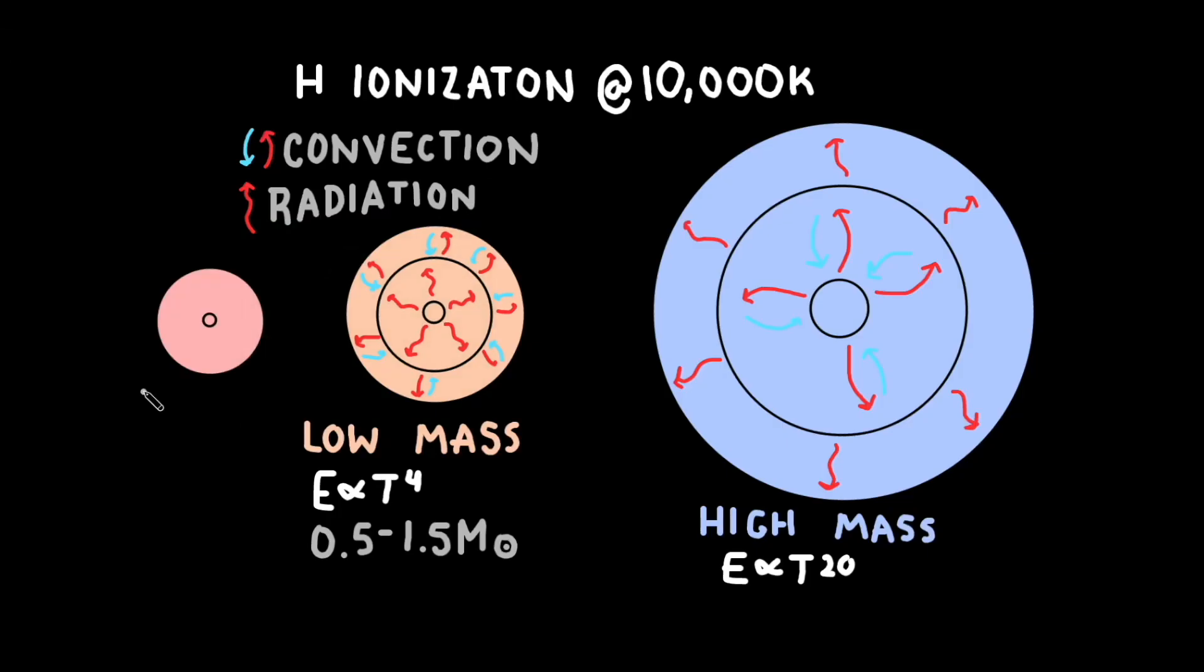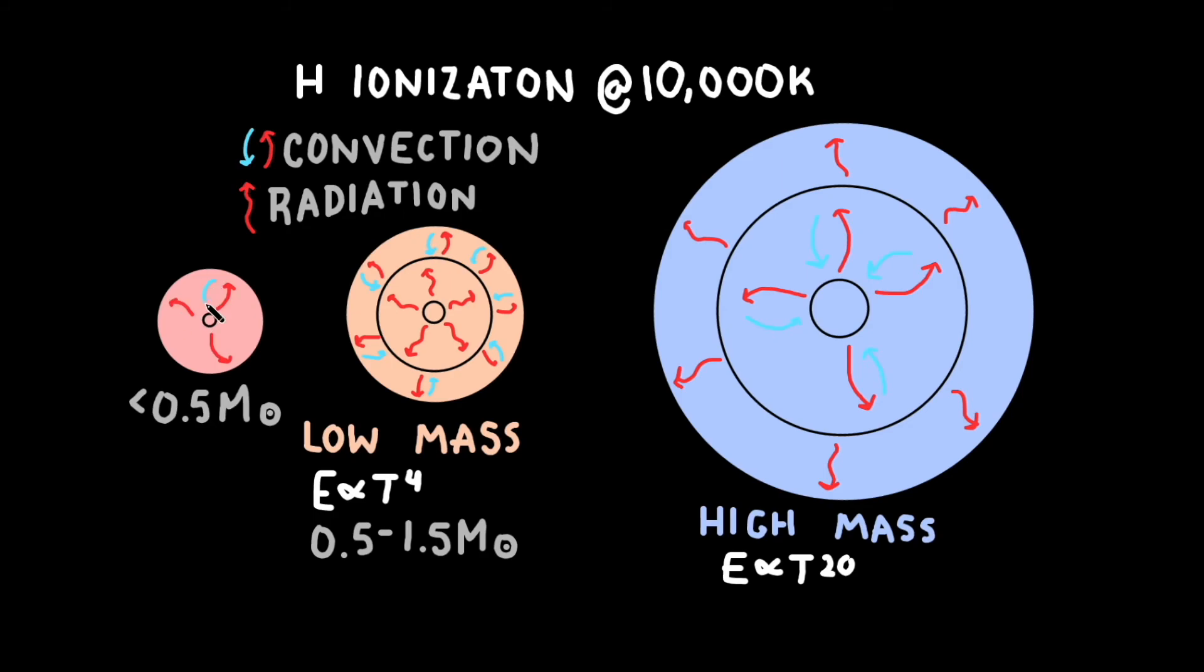Some stars, think less than 0.5 solar masses, are so cool that the convective envelope extends throughout the entire star. Lastly, massive stars have a convective layer enveloped by a radiative layer.